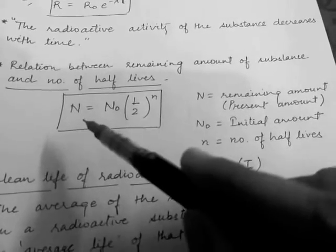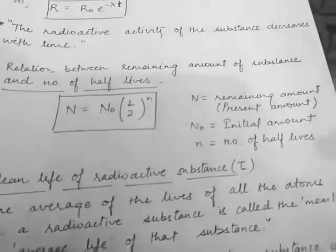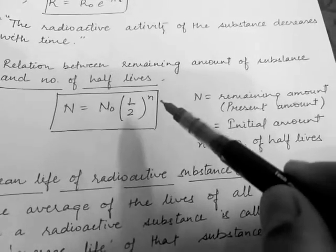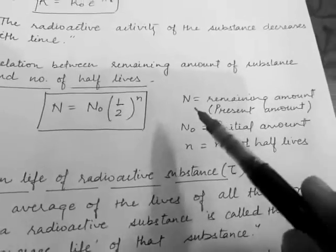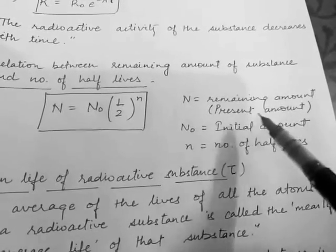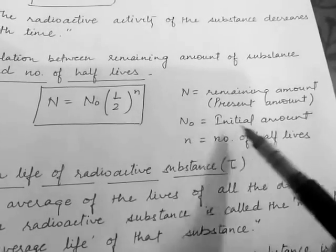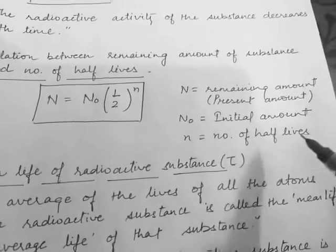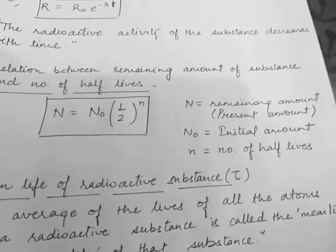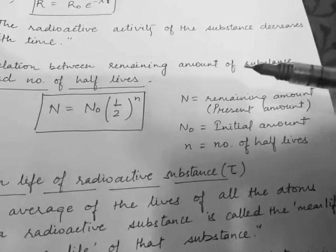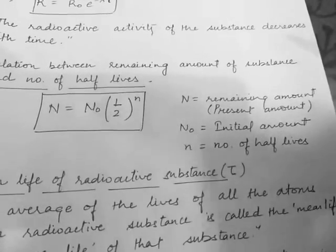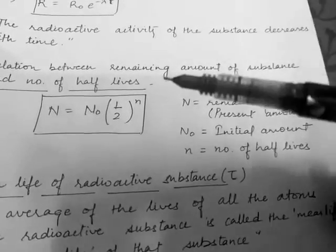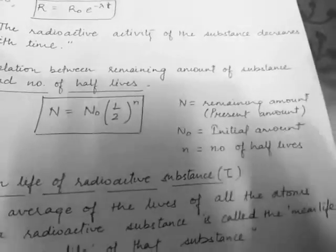We also have a relation between the remaining amount N and the number of half-lives: N equals N₀ times (1/2) raised to the power n, where capital N is the remaining amount, N₀ is the initial amount, and small n is the number of half-lives. For example, if the half-life of a substance is 5 years and we want the remaining amount after 15 years, then n equals 3.